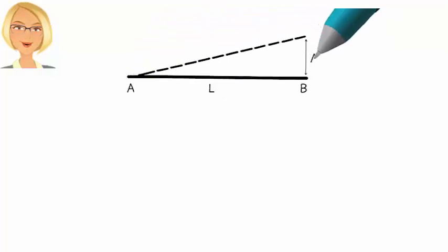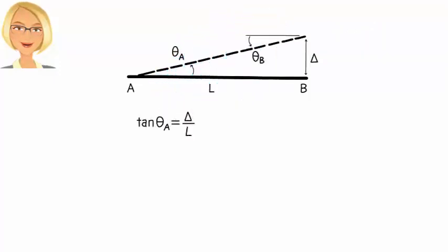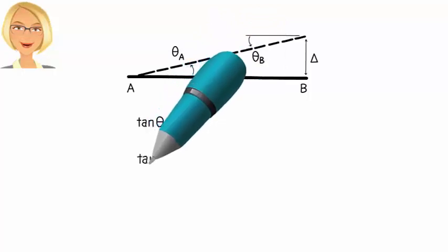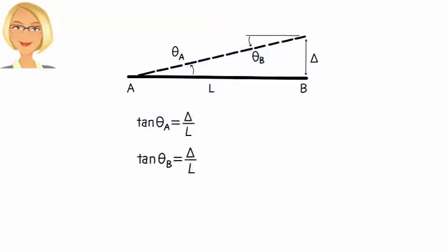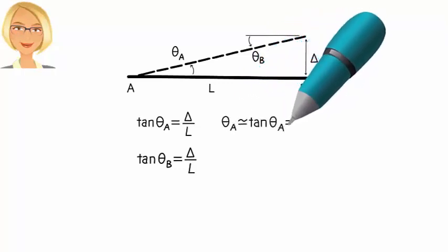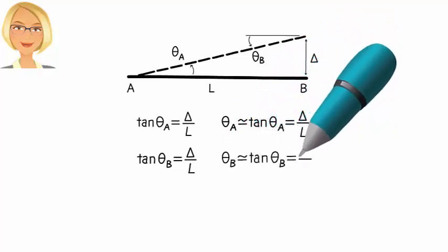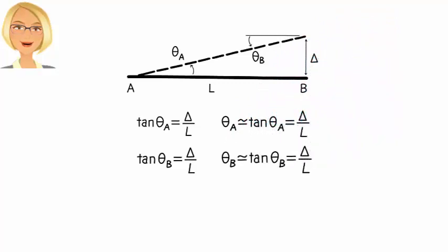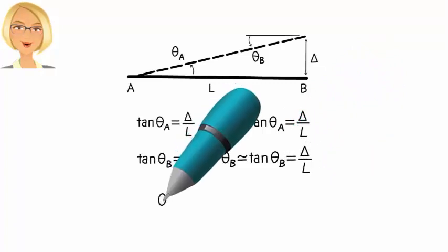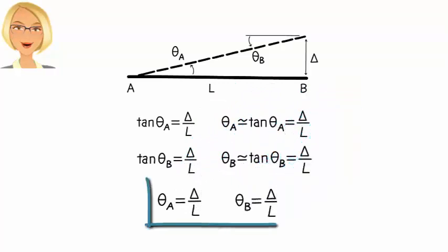If the member displaces like this, we could say tangent theta A equals delta over L and tangent theta B equals delta over L. But since our analysis is based on the assumption that joint rotations are very small, we could write theta A equals delta over L. And theta B equals delta over L. Therefore, when differential displacement delta is present, the end rotations equal delta divided by L. Okay, but how do we incorporate this in the slope deflection equations?